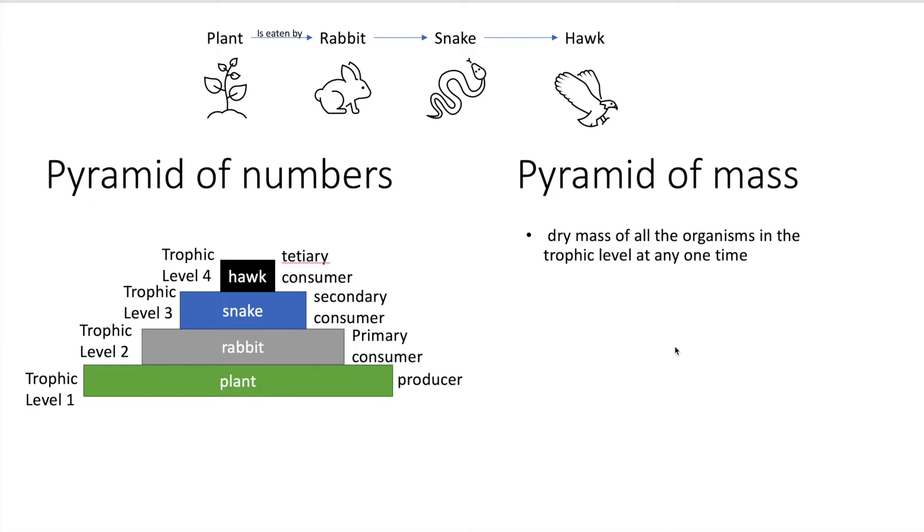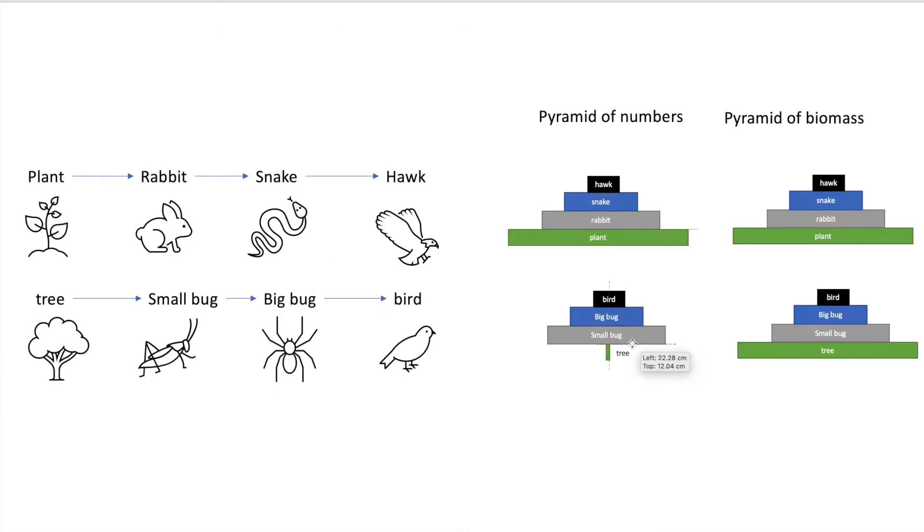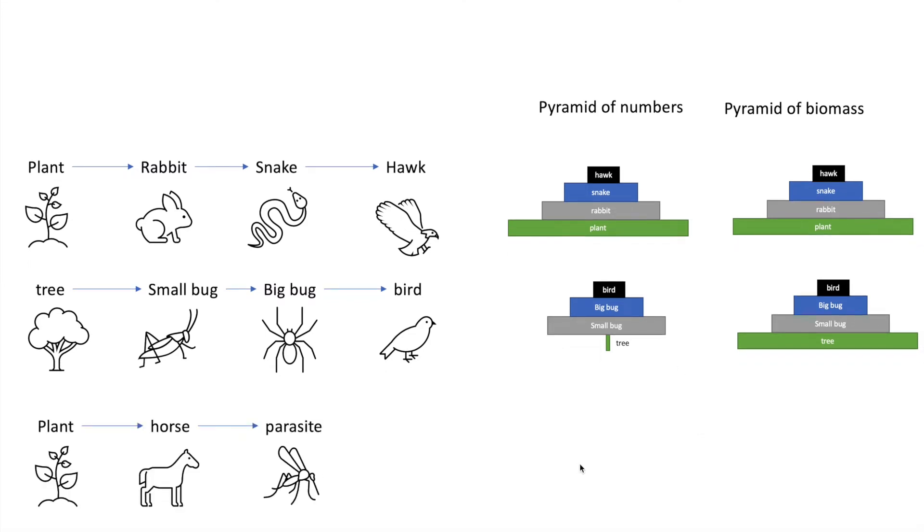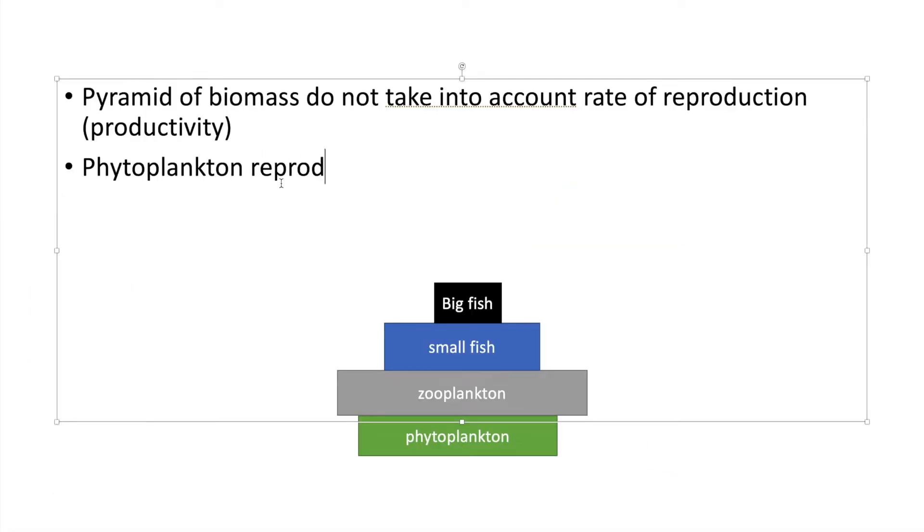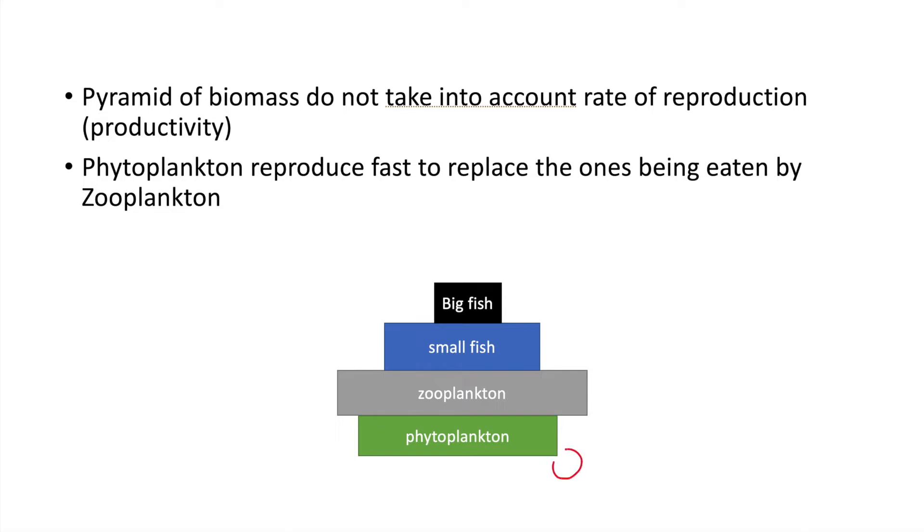Sometimes there are certain variations like this. So you can see there is one tree, many small bugs and lesser beaker bugs and even lesser tertiary consumers. Or in the case of parasites, parasites usually will be larger in number as compared to the food source. So there's lots of grass, one herbivore and many parasites. Also for pyramids of biomass, they do not take into account the reproduction rate, productivity of the organisms. So sometimes the shape of the pyramid can vary in this case.